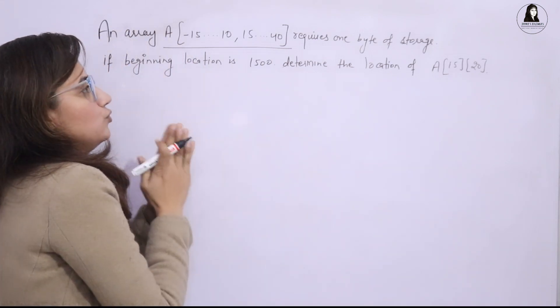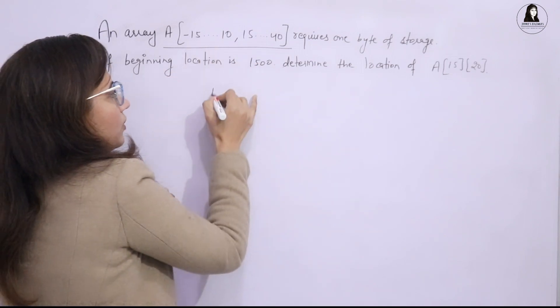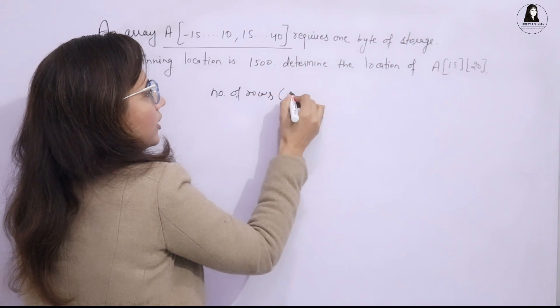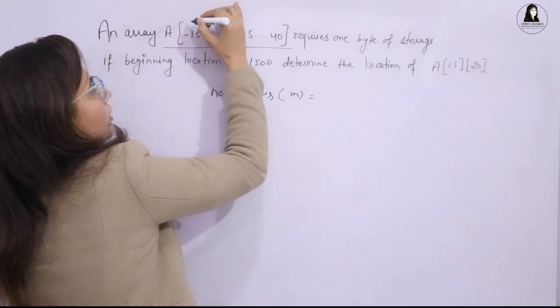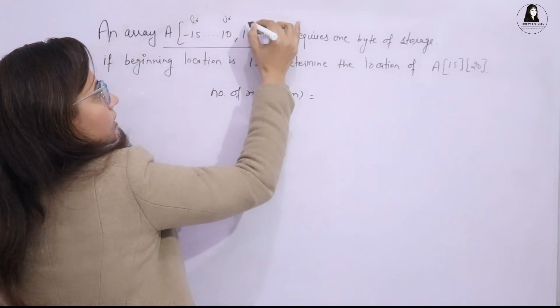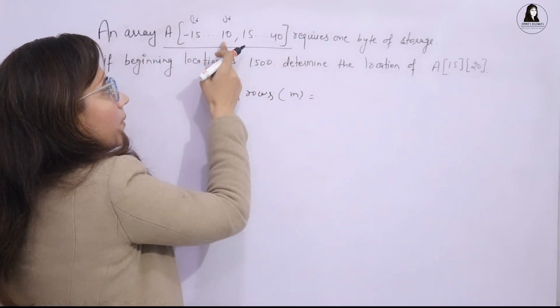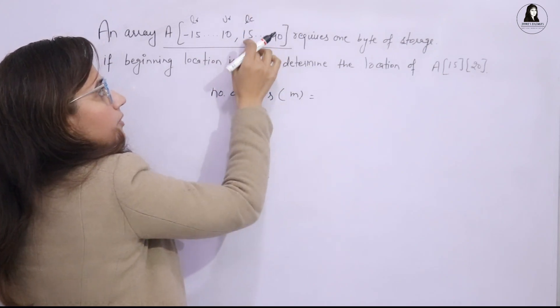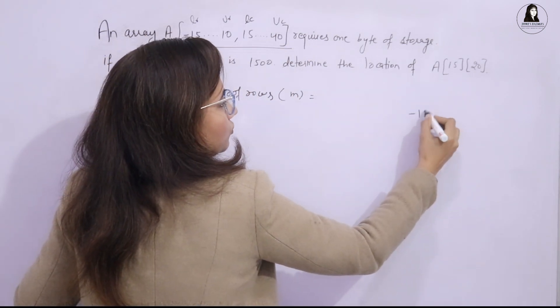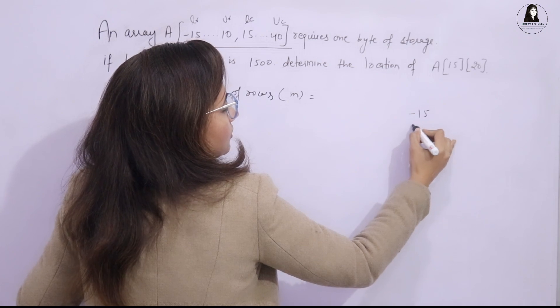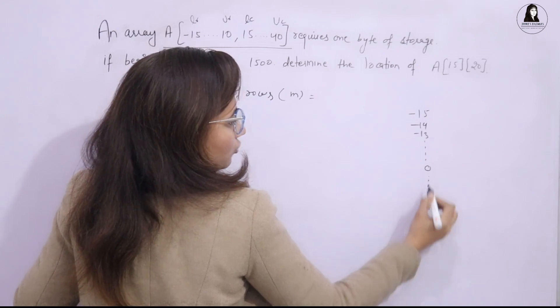Now, what we have to do first - we don't know the number of columns and number of rows in this array because the range is given. So now if you want to calculate number of rows, how will you calculate? I'm going to represent that by M. This is LR, this is UR - lower limit for row index and upper limit for row index. This is LC, lower limit for column index and this is UC, upper limit for column index.